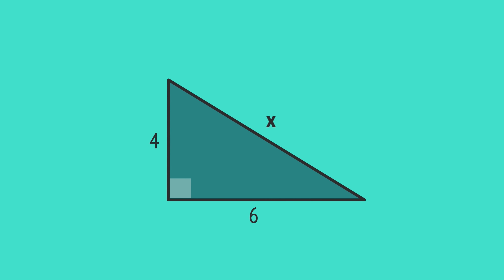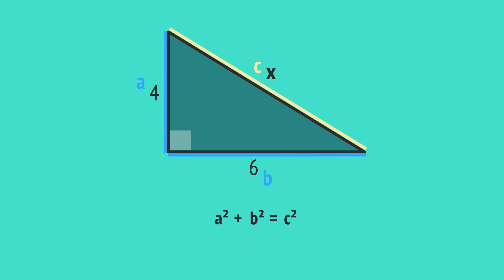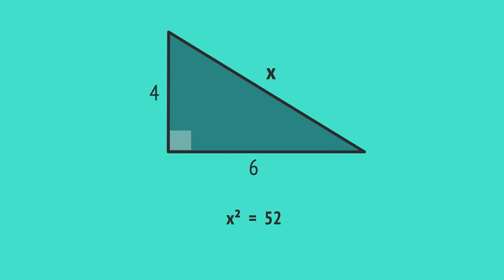In this right-angled triangle, we need to calculate x, which is the hypotenuse, or longest side, labelled c. The other sides are labelled a and b in any order. The three sides are related by Pythagoras, so to calculate the longest side, we substitute these values into the formula to give 4 squared plus 6 squared equals x squared. Squaring the numbers gives 16 plus 36, so x squared equals 52. We take the square root of both sides, and using a calculator, we get x equals 7.2 when rounded to one decimal place.